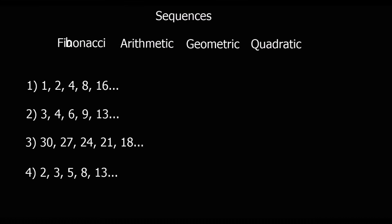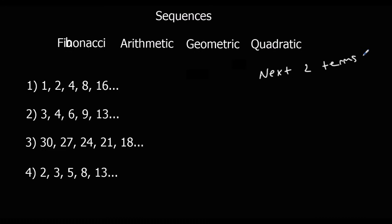See if you can identify which type each sequence is — Fibonacci, arithmetic, geometric, or quadratic — and also work out the next two terms for each. Pause the video and have a go, then I'll go through the answers.